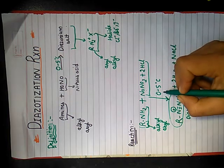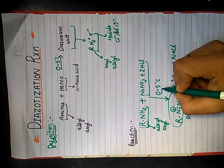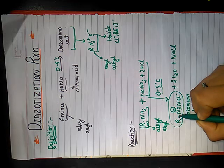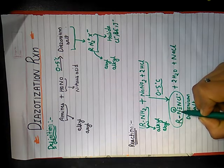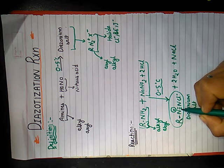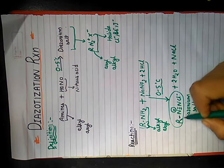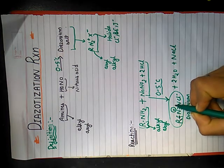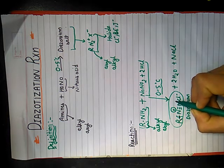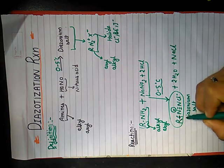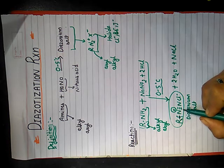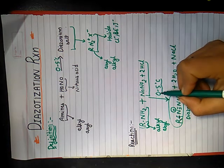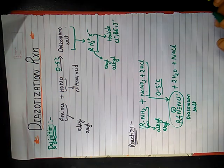Now I will explain why the temperature range must be between 0 to 5 degrees Celsius. As you can see in the product, there is a compound having a positive charge over an electronegative atom, so it is highly unstable. We know that N₂ is a good leaving group, so at high temperature, the carbon-nitrogen bond breaks and there occurs loss of nitrogen gas. Therefore, at high temperature, diazonium salt formation does not take place. Hence, it is essential that the temperature range must be between 0 to 5 degrees Celsius.